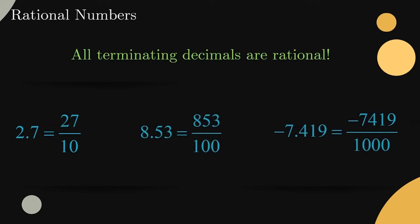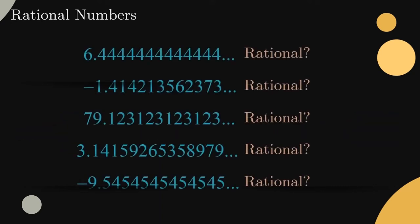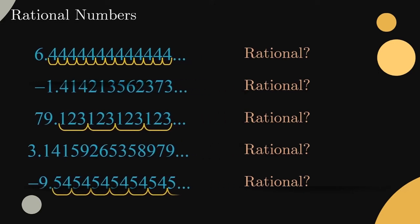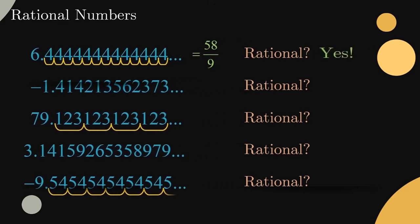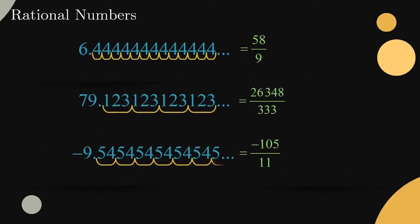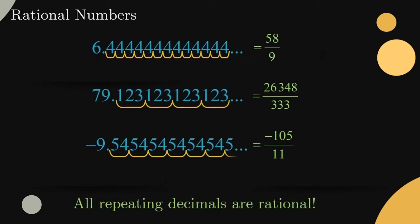But what about non-terminating decimals? Although these are a little tougher to tame, it can be shown fairly quickly that as long as the digits after the decimal point have a repeating pattern, we can indeed write them as fractions using only integers. To see how we can go about rewriting non-terminating decimals in fraction form, check out the video on that topic.